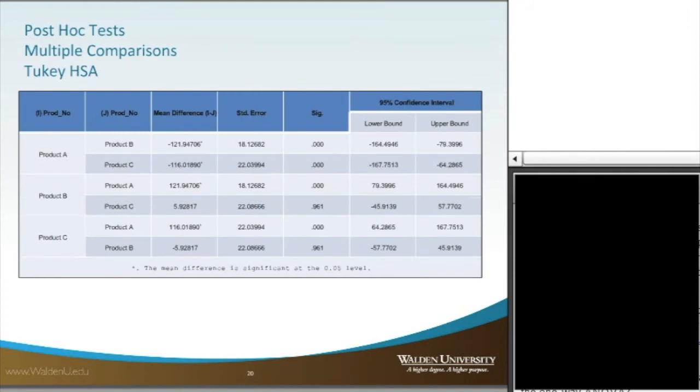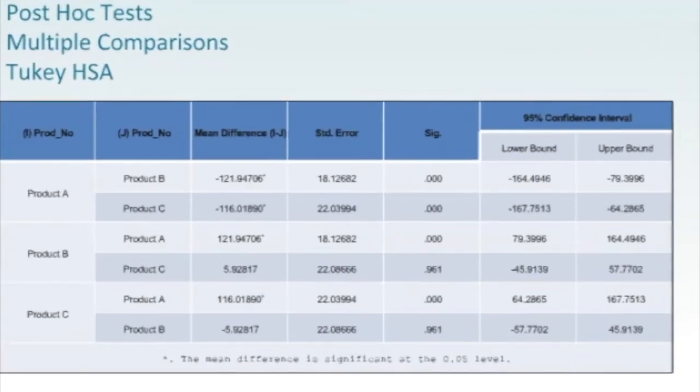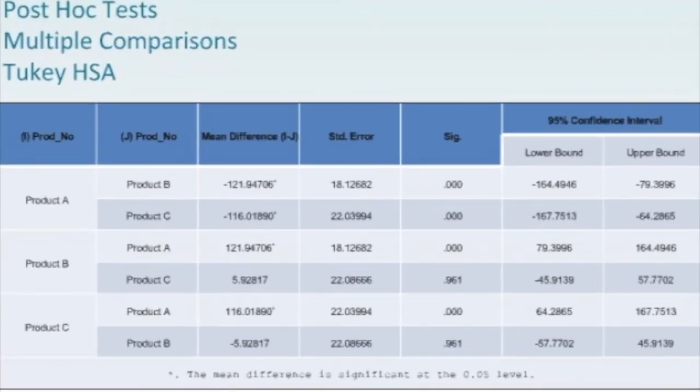And the next table we get is the Tukey HSD, which is Honest Statistical Difference. That's what the Tukey HSD stands for. But this is the post hoc test, which is run after the ANOVA for multiple comparisons. And when we look at the first row for product A, we're looking at product A compared against product B and product C.